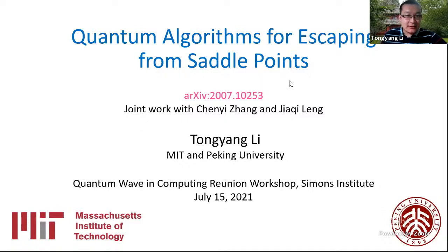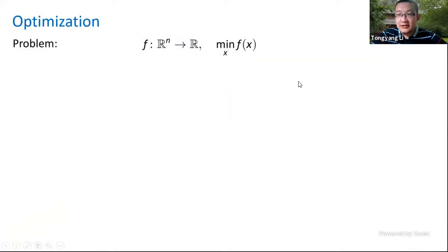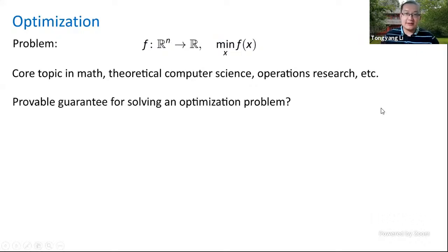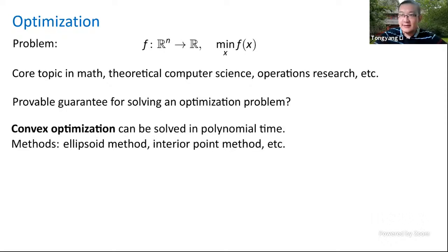Today I'm going to talk about optimization. In general, we have an n-dimensional function that maps R^n to R, and the goal is to minimize this function. Such optimization problems are a core topic in math, theoretical computer science, operations research, and so on. A main class that has been extensively studied is convex optimization. It is well known that convex optimization can be solved in polynomial time, with well-known methods such as the ellipsoid method or the interior point method.